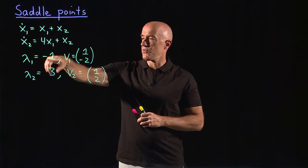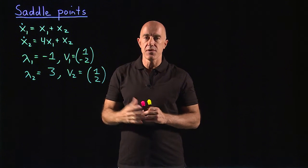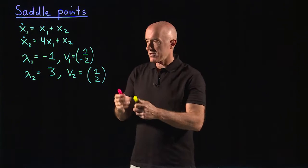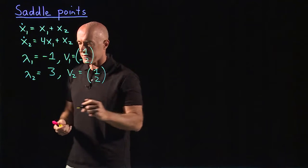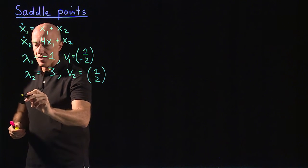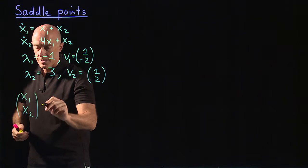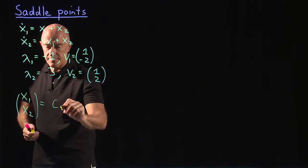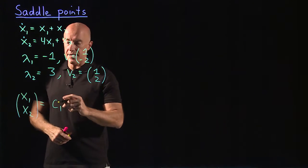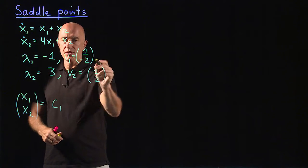This is the case of two real eigenvalues, but they're opposite sign. So let's write down the solution again. We have our x1, x2 vector is equal to a constant times our first eigenvector, 1 minus 2, times e to the minus t...